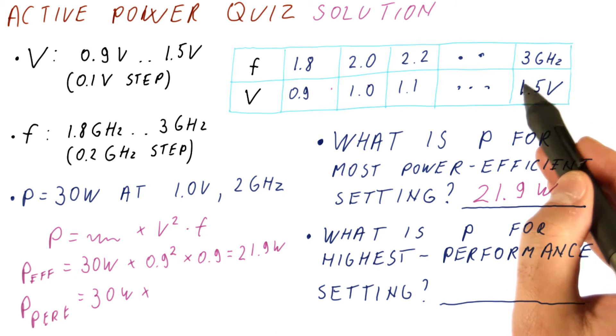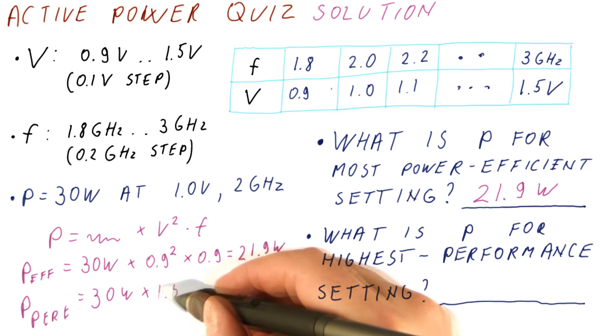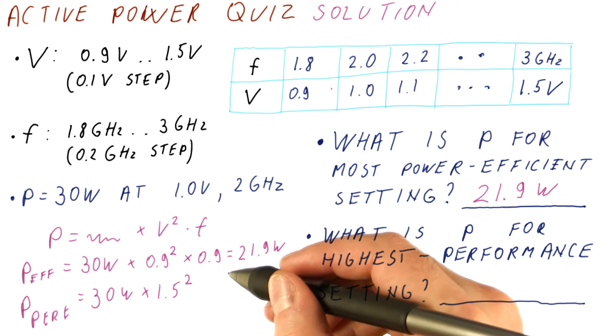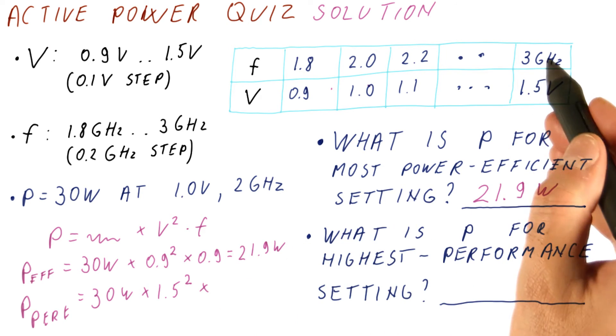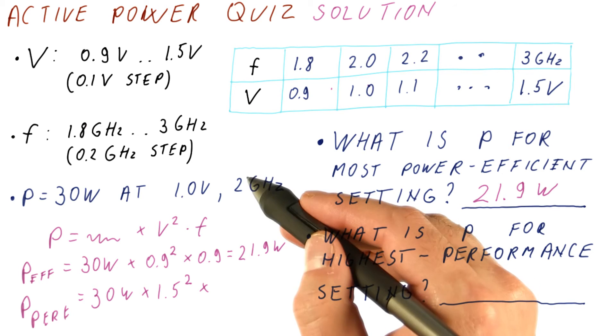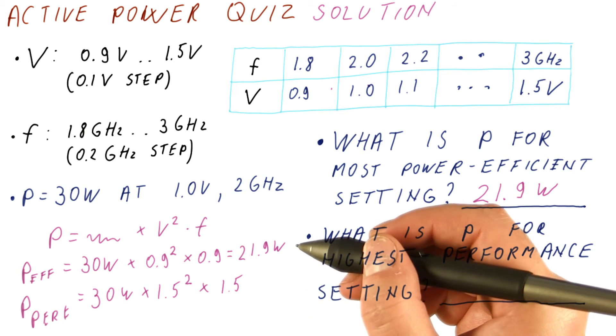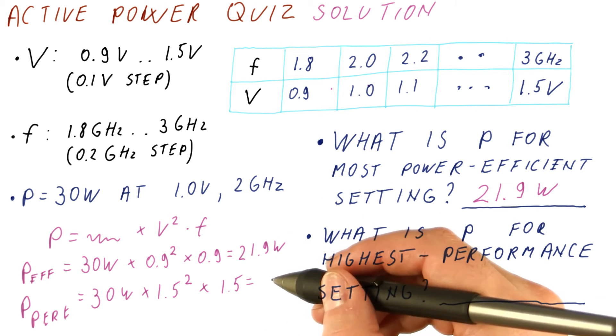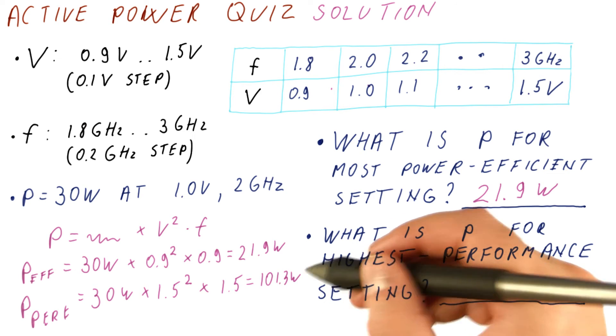What we have now is the power for the performance is going to be equal to 30 watts times, the voltage is now 1.5 times what it was. So it's 1.5 squared times, the frequency is 3 instead of 2 gigahertz, so that has also increased by a factor of 1.5. And if you multiply this out, we get 101.3 watts.